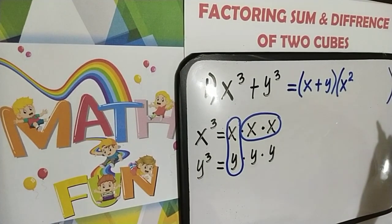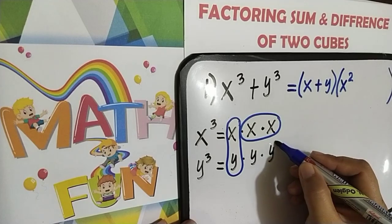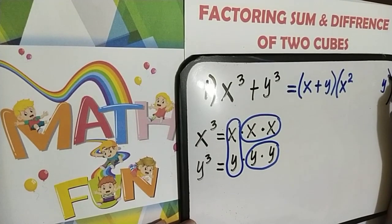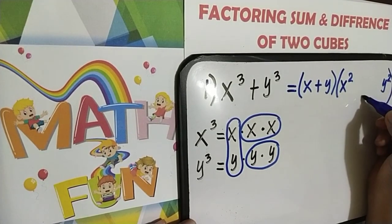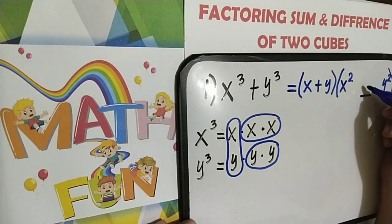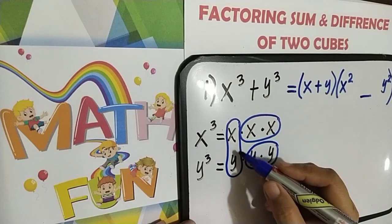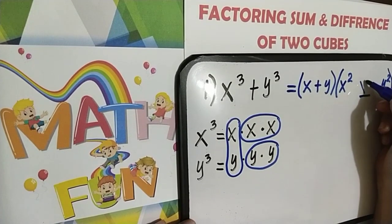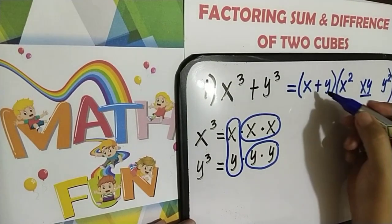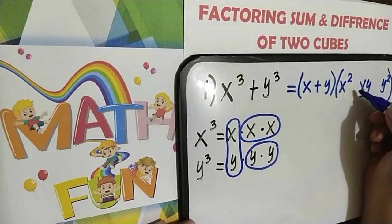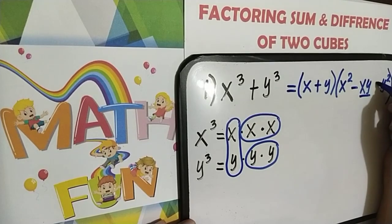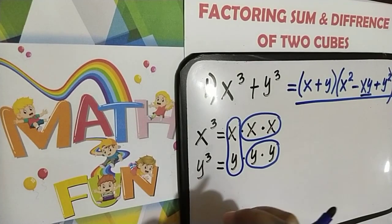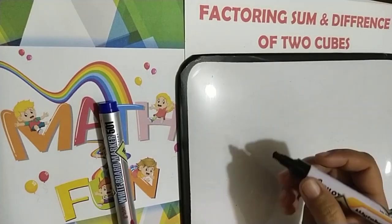Then let's use the third pair: y times y, that is y squared. How can we get the middle term of our trinomial factor? By using the first pair, x and y, multiply the two — x times y, that is xy. And since this is plus, the operation for the second factor should be minus and plus. And this is now our factors of x cubed plus y cubed.